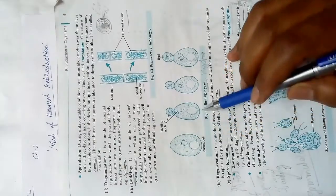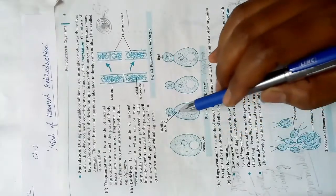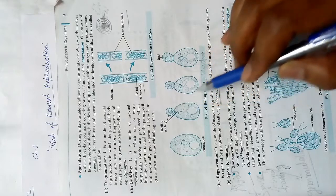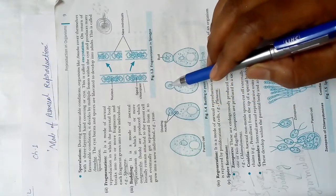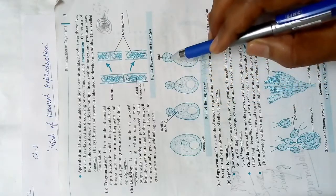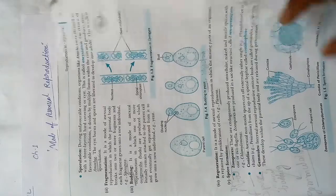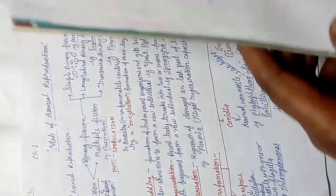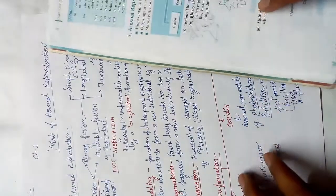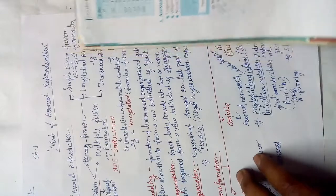You can see in the diagram: this is the parent cell, this is the bud, this is the mature bud, and this is about to get separated. The same process also occurs in Hydra.